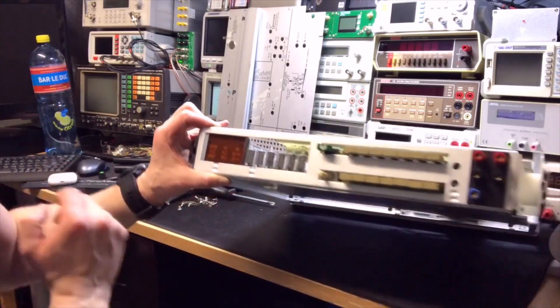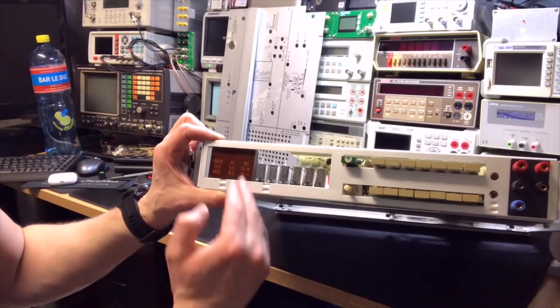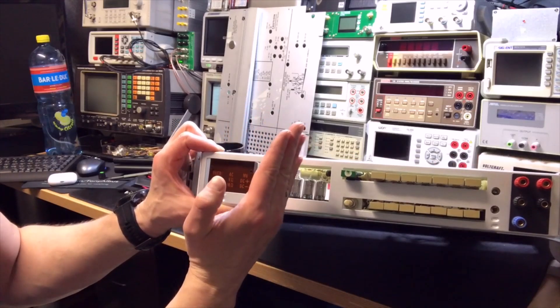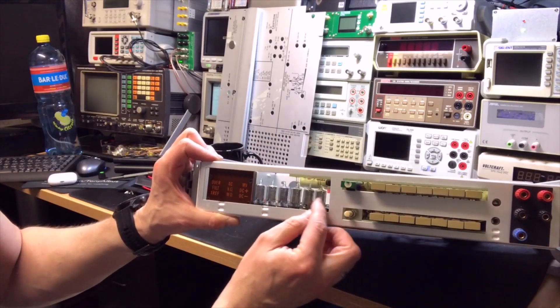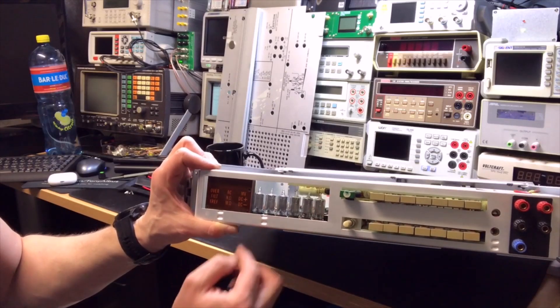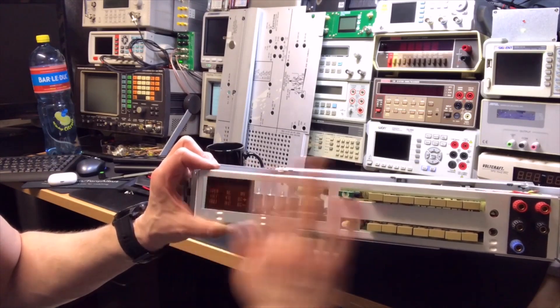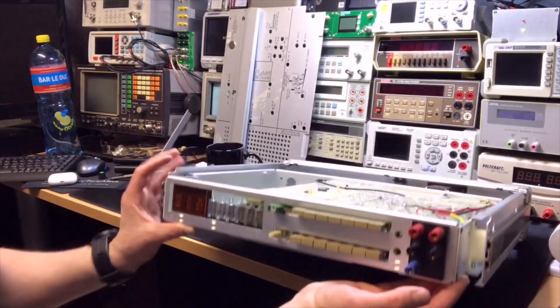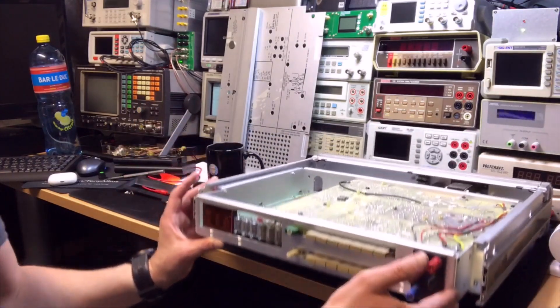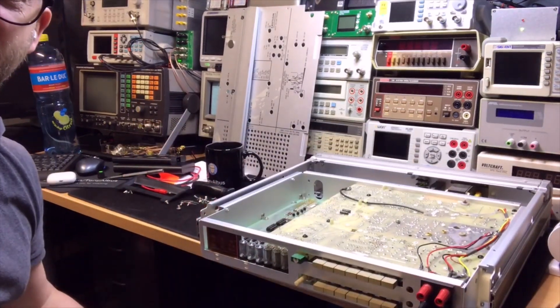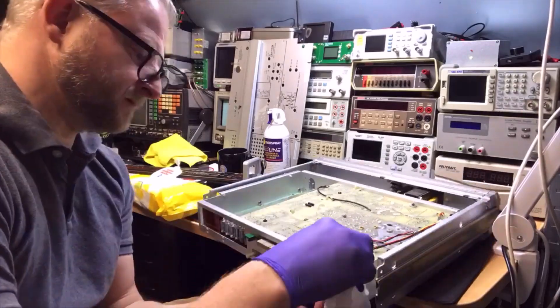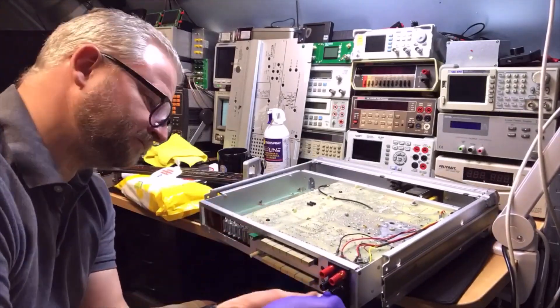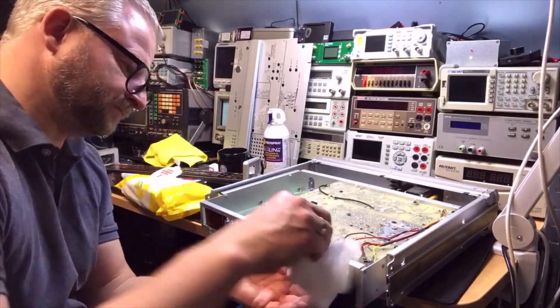And what you can maybe see is that the Nixies are a little bit like this. They are tilted to the right. So I carefully want to push them back. But as you can see, it is fairly clean. So there's not much to do.